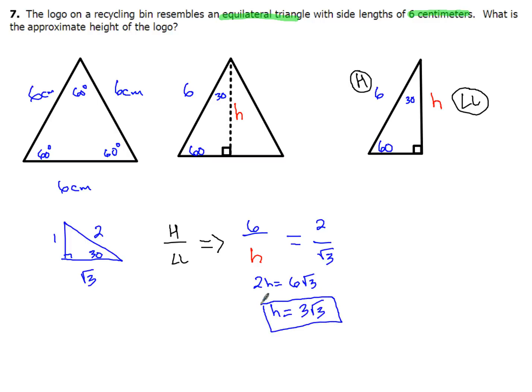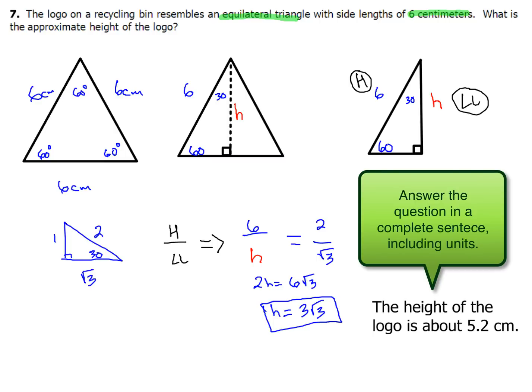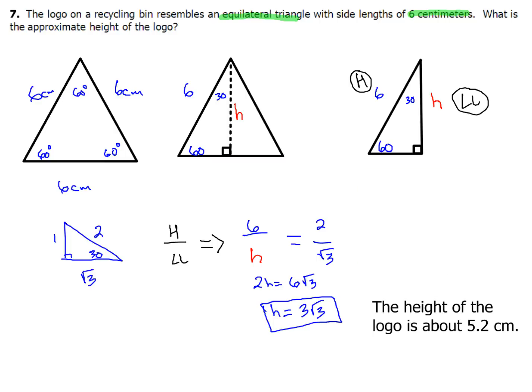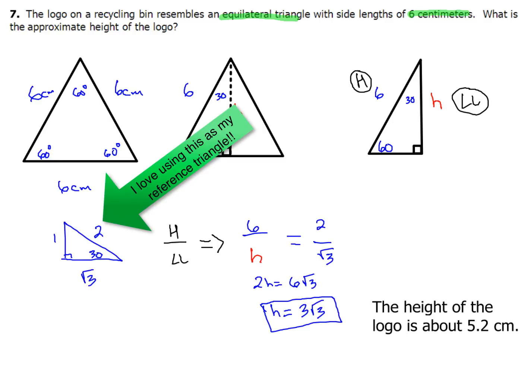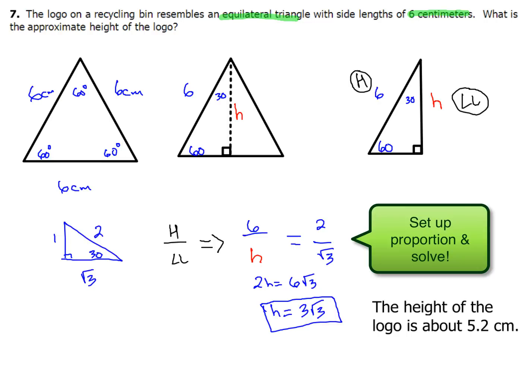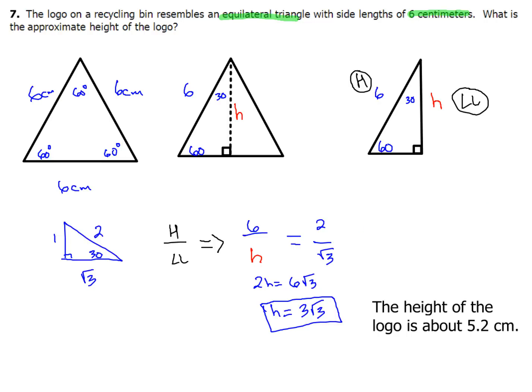That is how long the height is. But they want the approximate height of the logo. So take 3 square roots of 3, put it into a calculator, and round to the tenths place. Then write a sentence that actually answers the question — your answer needs to be in a complete sentence and include units. That wasn't so bad. I like using the reference triangle and setting up proportions instead of looking at all the different formulas, because the formulas can be a little bit confusing — there are four different formulas. But if you just remember how to set up a ratio and then solve a proportion, you're money.